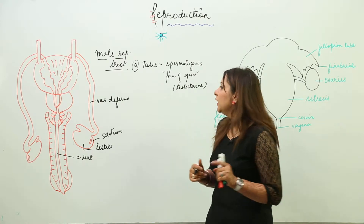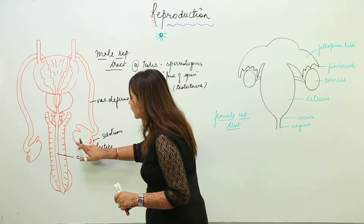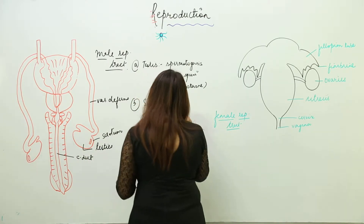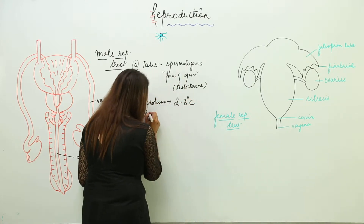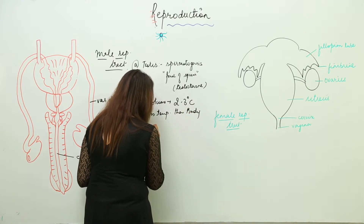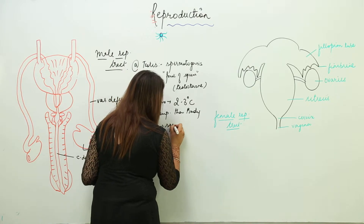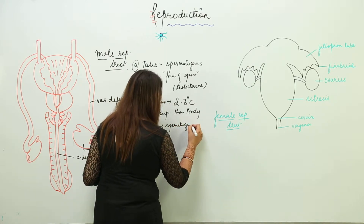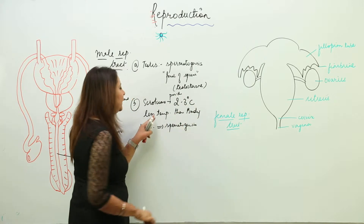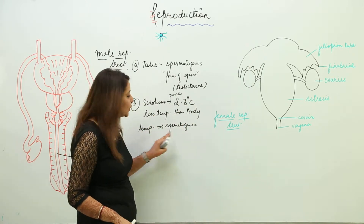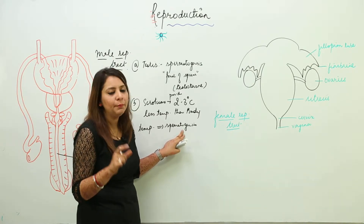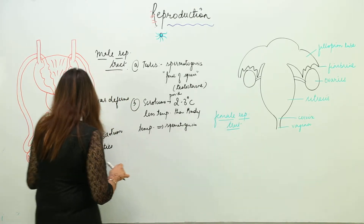The scrotum is the skin layer which surrounds the testes. The function of the scrotum is to provide 2 to 3 degrees Celsius less temperature than body temperature, which is required for spermatogenesis. This is a very important function of that pouch — providing the appropriate temperature required for spermatogenesis.